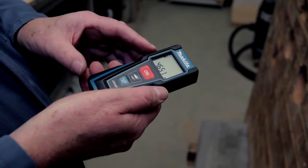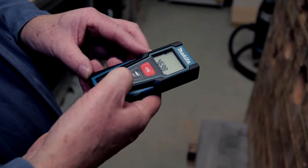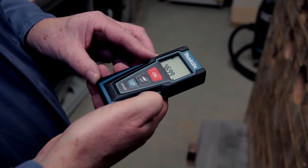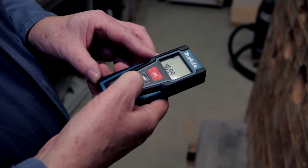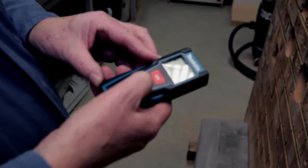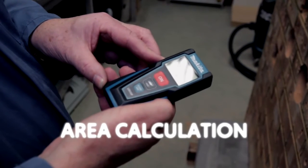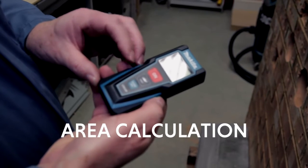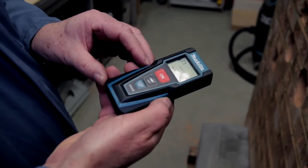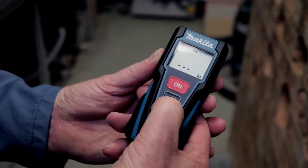This unit can also calculate area. Area is done by pressing the area button, which measures length and width. You can switch between units like inches.